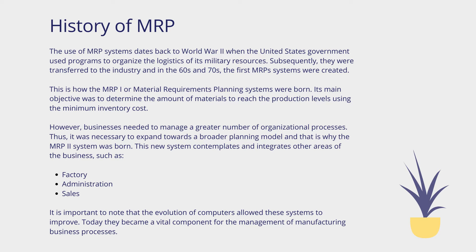However, businesses needed to manage a greater number of organizational processes. Thus, it was necessary to expand towards a broader planning model, and that is why the MRP-2 system was born. This new system contemplates and integrates other areas of the business, such as factory, administration, and sales. It is important to note that the evolution of computers allowed these systems to improve. Today, they became a vital component for the management of manufacturing business processes.